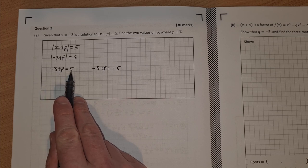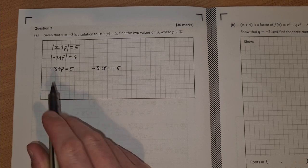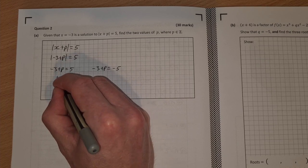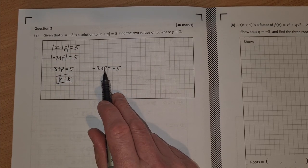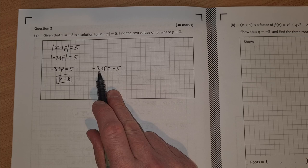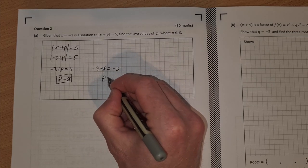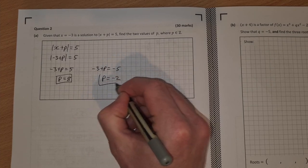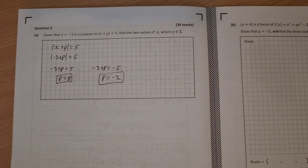p is equal to 5 plus 3, so p is equal to 8. That's one solution. And p is equal to minus 5 plus 3, so p is equal to minus 2. So p is equal to 8 and p is equal to minus 2.